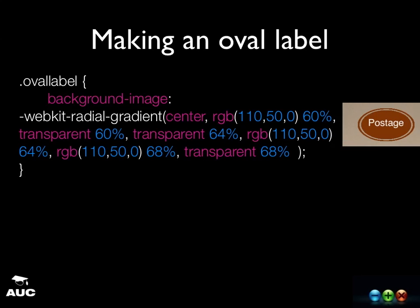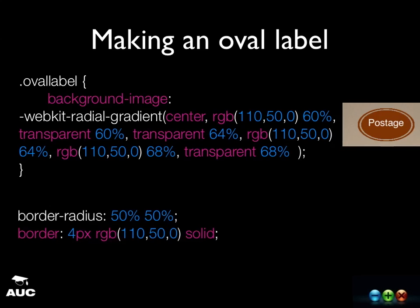Let's look at making the oval labels from the WWDC talk. The first way I tried was using a radial gradient — an elliptical gradient. It looks a bit dodgy because there doesn't seem to be any nice anti-aliasing on those gradients. My second attempt was to just use border-radius on the divs, and that actually looks a lot nicer. The lesson here is to experiment with what you've got — there's usually more than one way to do things in CSS, and sometimes the results will be a lot better with one approach rather than another.